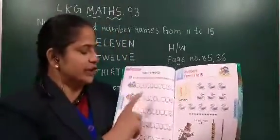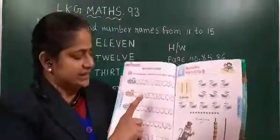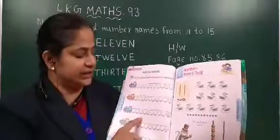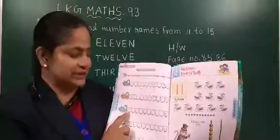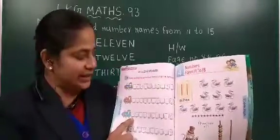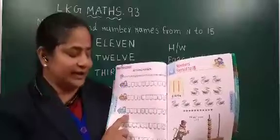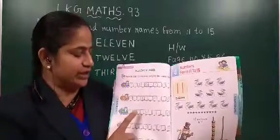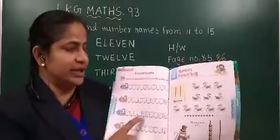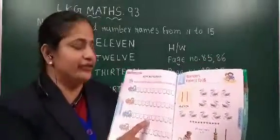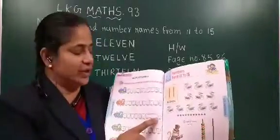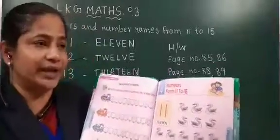Now third one — first number already given in the test book. One ke baad konsa number ae ga? Two aapko likhna hai, three likhna hai, four likhna hai. Now five diya hai. Five ke baad six, seven, eight, nine. Now last number ten — aapko book mein wahan likhna hai.